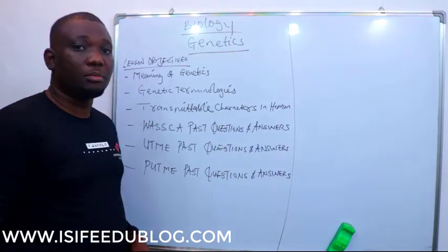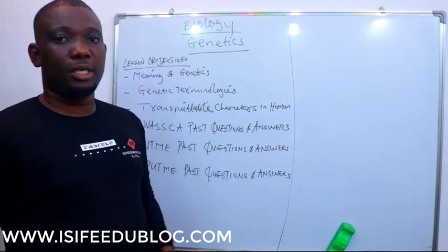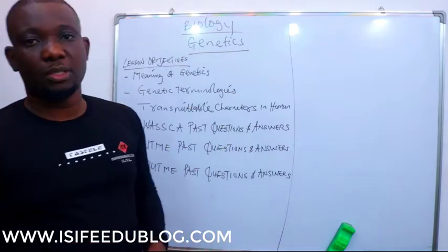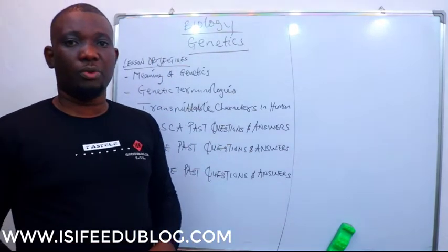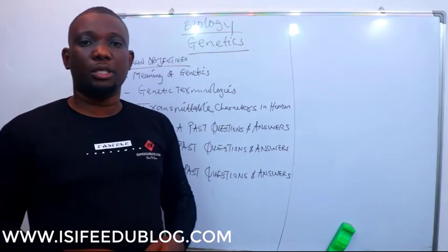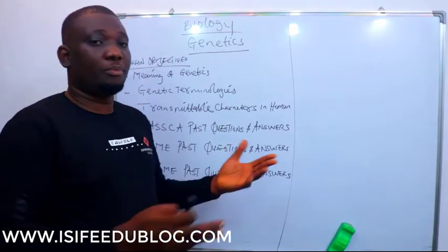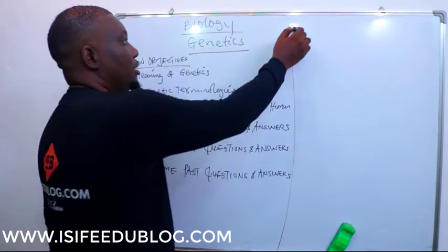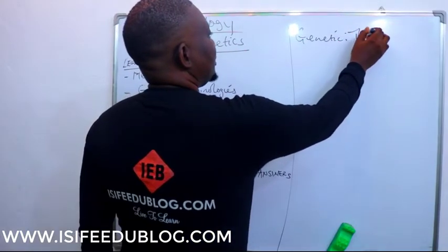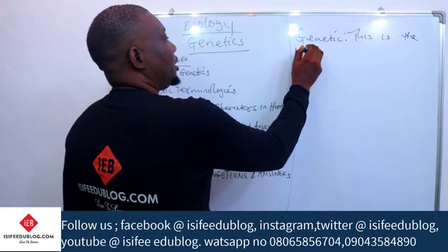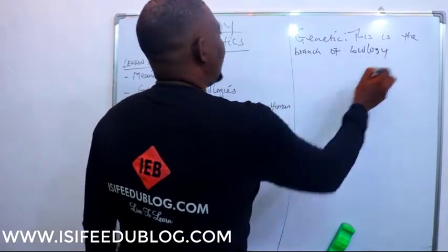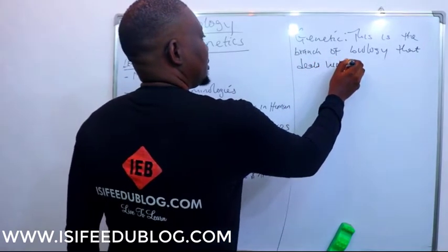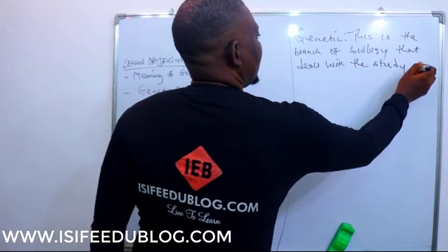We will start with the first lesson objective: genetics. What is genetics? Like we have other branches of biology, biology is broadly grouped into two major branches — zoology, which is the study of animals, and botany, which is the study of plants. But there are other branches of biology, and genetics is one of them. So genetics is a branch of biology.